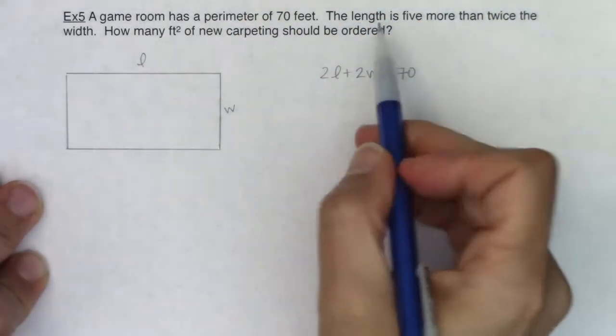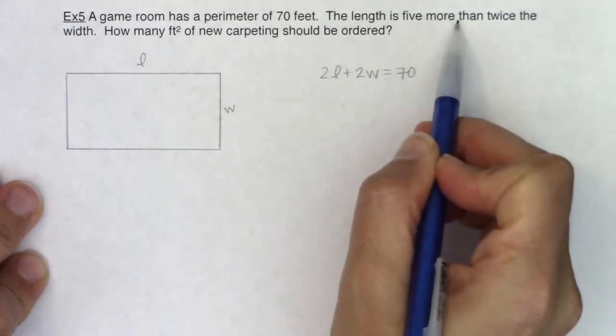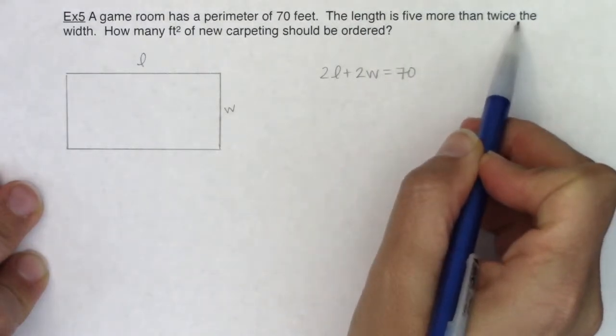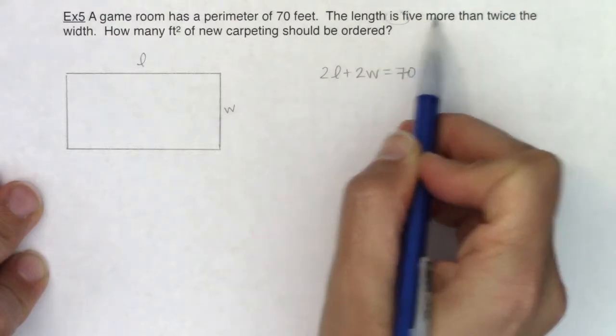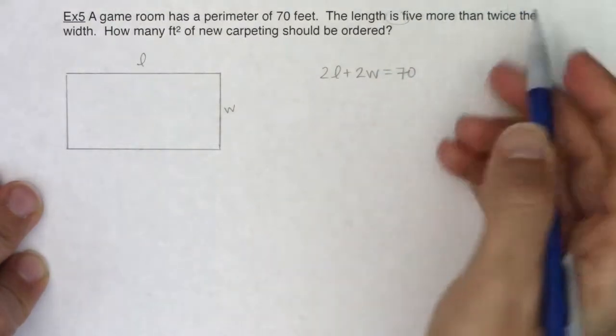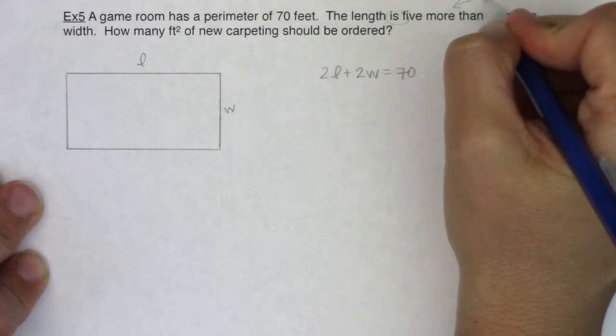I'll keep that in mind. It says the length is five more than twice the width. When we talk about math operations with this 'more' and 'twice' we've got addition and multiplication.